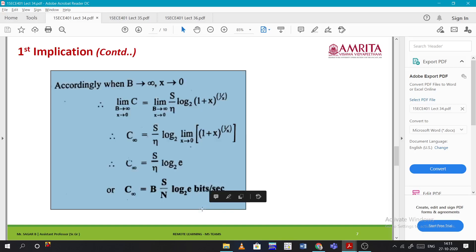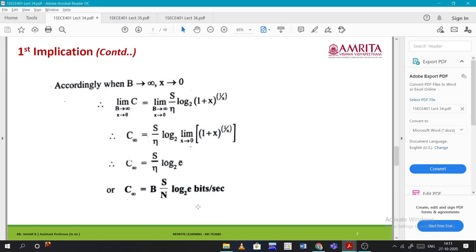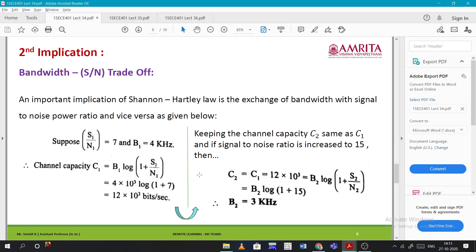Finally, C_∞ = S/η · log₂e bits/sec. In this subject, when there is log without any base, it is by default base 2. We need to remember that - anywhere here it is base 2.